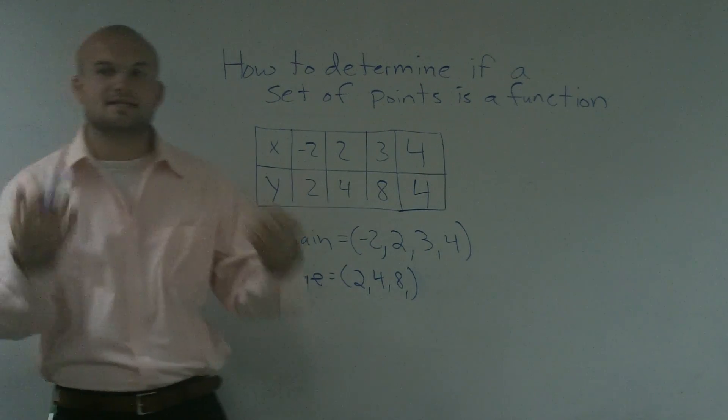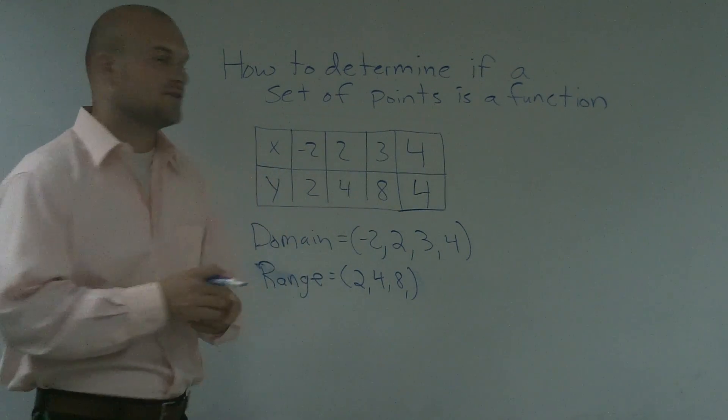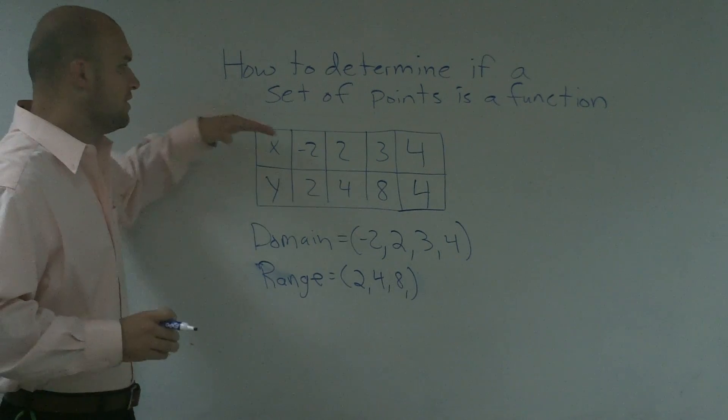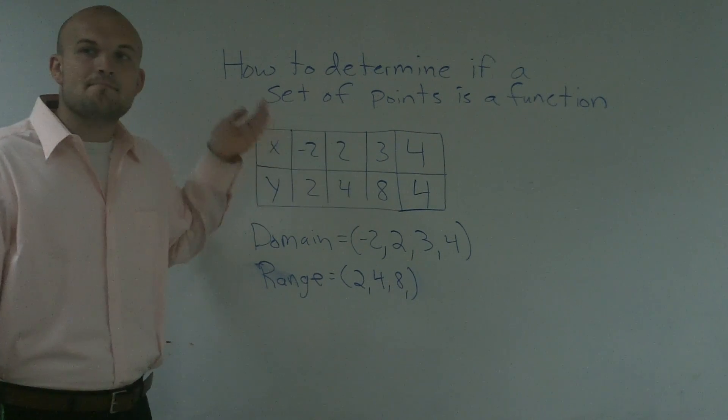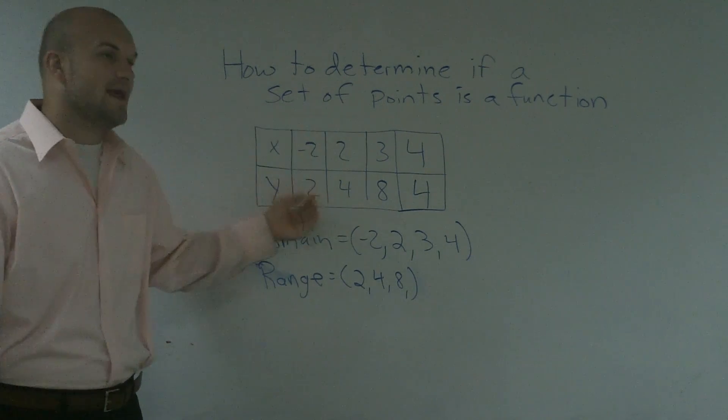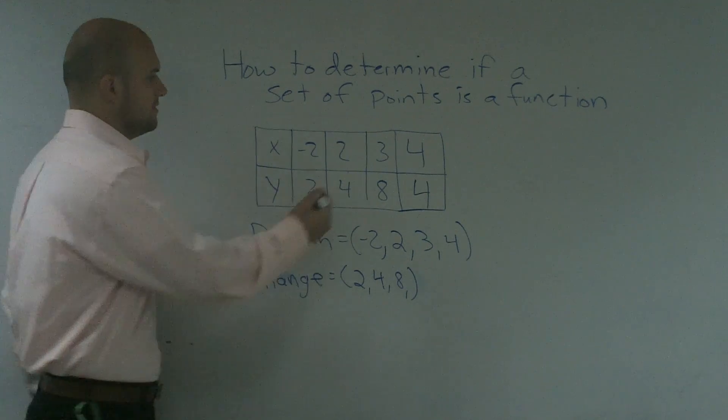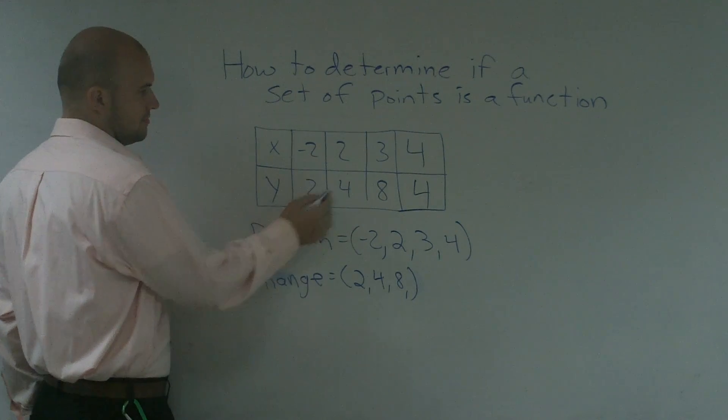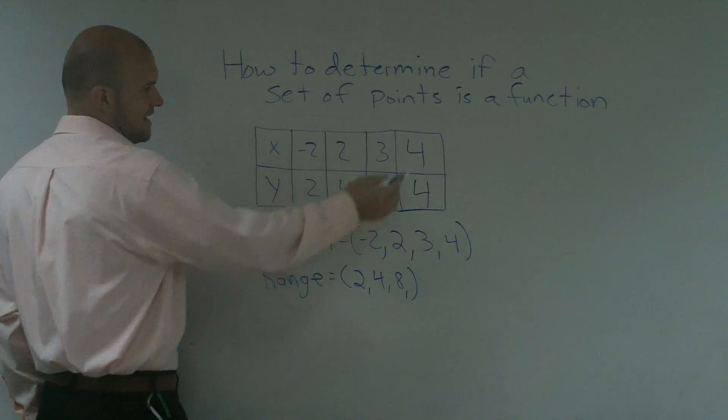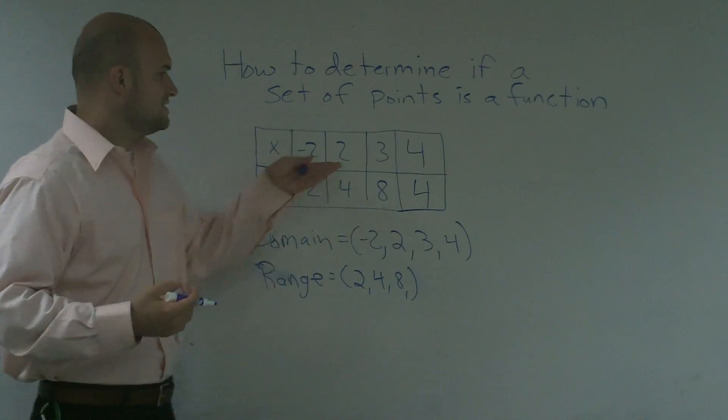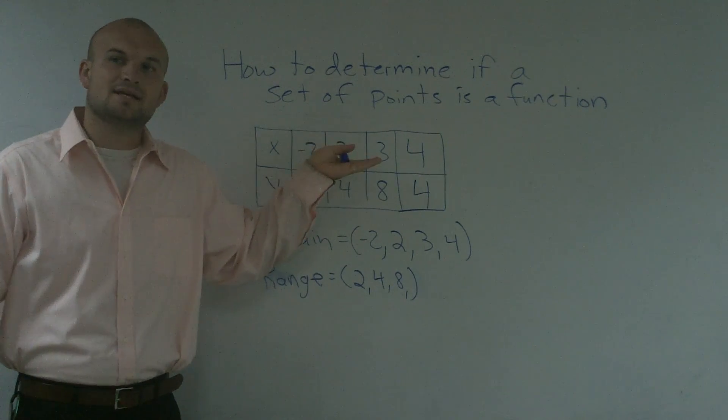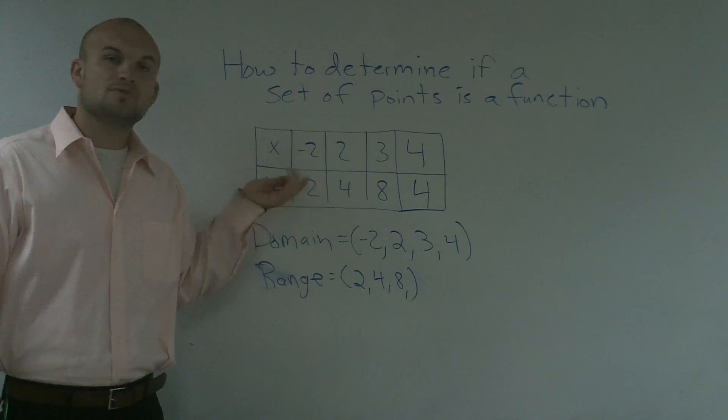Now we need to determine is it a function. For you guys to remember, it's always a function if every element in your domain maps to exactly one element in your range. So negative 2 goes to 2, 2 goes to 4, 3 goes to 8, and 4 goes to 4. Therefore, each element in our domain maps to exactly one element in the range, so this is a function.